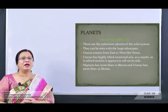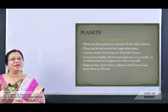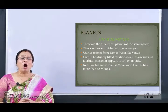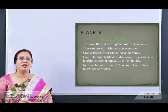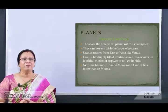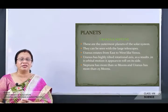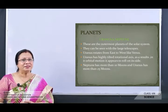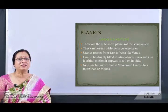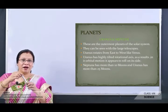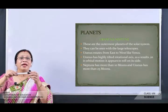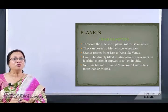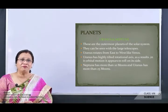The last two planets are Uranus and Neptune. They are the outermost planets of the solar system and can only be seen with large telescopes. Uranus rotates from east to west, like Venus. Uranus has a highly tilted rotational axis, so that in its orbital motion it appears to roll on its side. Neptune has more than 10 moons and Uranus has more than 25 moons.